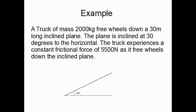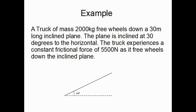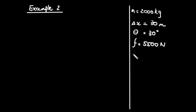They're asking us to calculate the work done on the object. Similar to the previous example where we calculated the net work done on the car, in this case we want to calculate the net work done on the truck. So W_net is what is being asked of us. Go ahead and attempt Example 2 and then come back to look at the solutions.